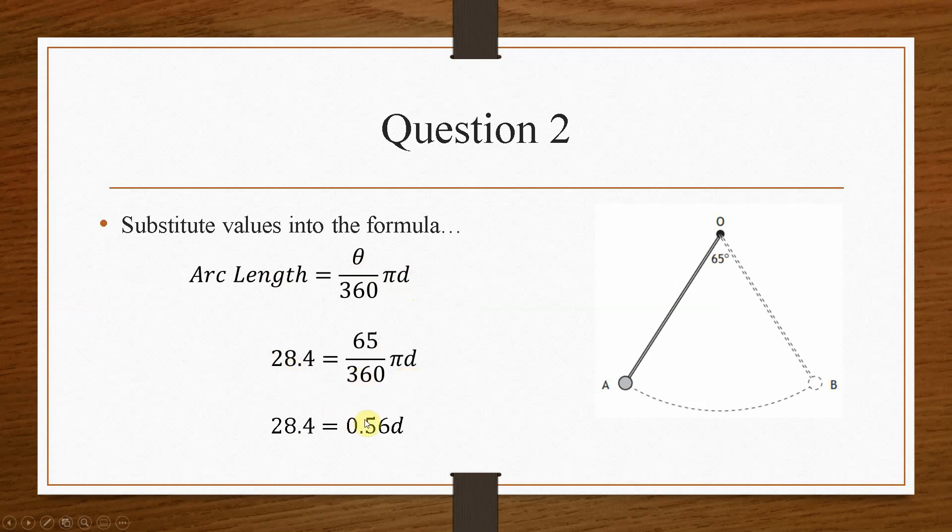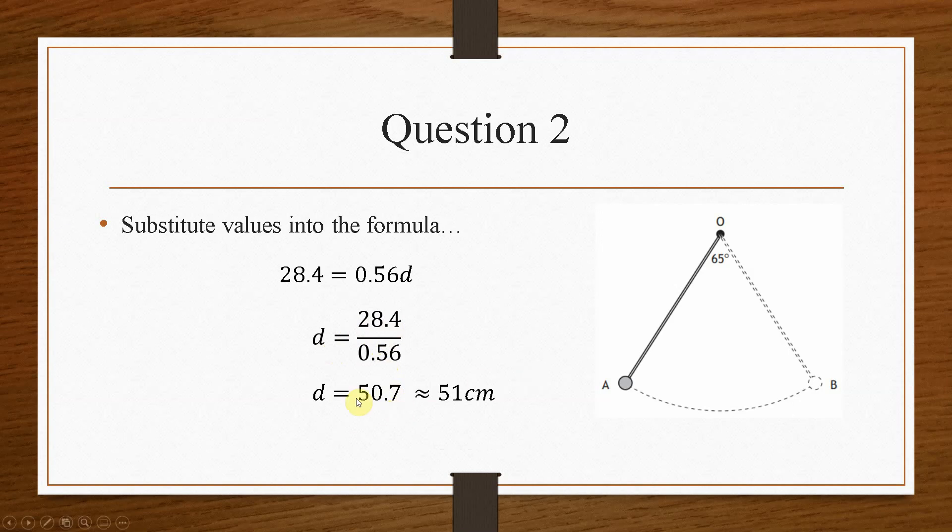Now we can simplify and change the subject of the formula. And we can get a value of D to be 28.4 over 0.56, which simplifies to 50.7. And we'll just round that to 51 centimetres. Now that is the diameter. From A to O is the radius. So what we have to do is divide the diameter by 2. And that tells us that the length of the pendulum here is 25.5 centimetres long. And that's how you would go about solving that kind of problem there.